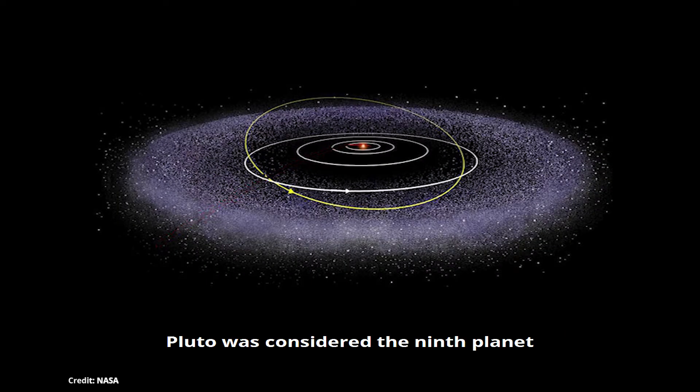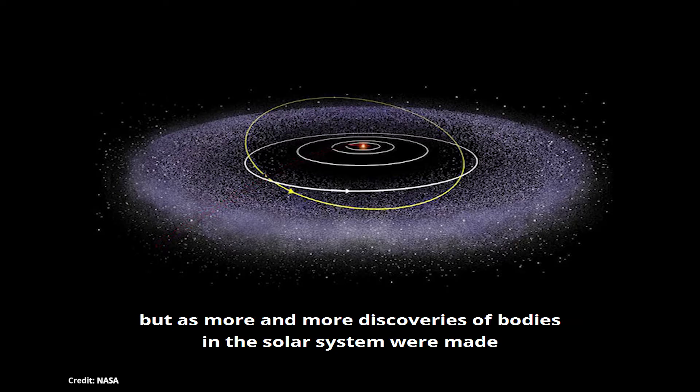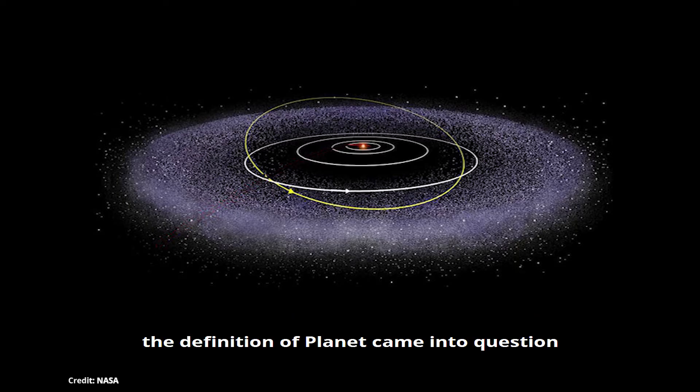Pluto was considered the ninth planet, but as more and more discoveries of bodies in the solar system were made, the definition of planet came into question.